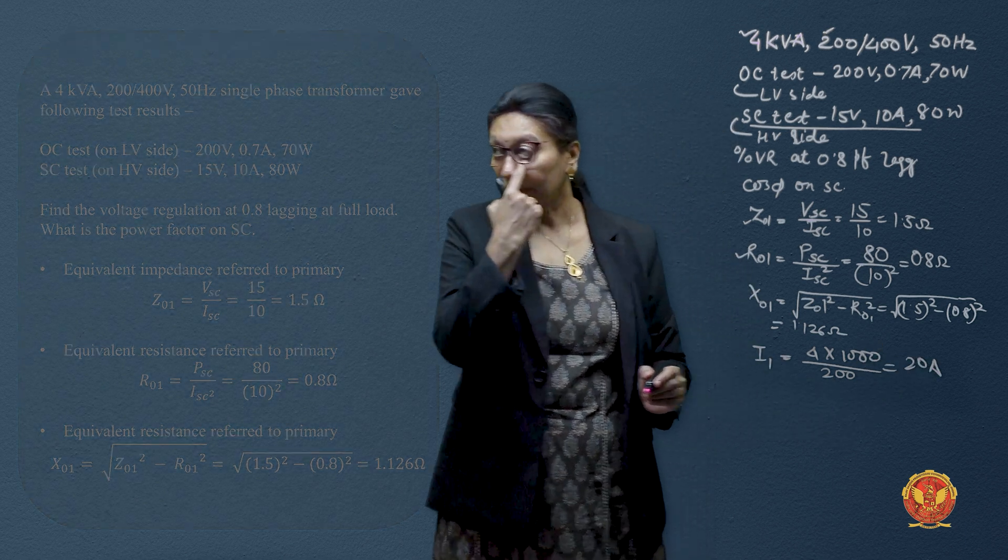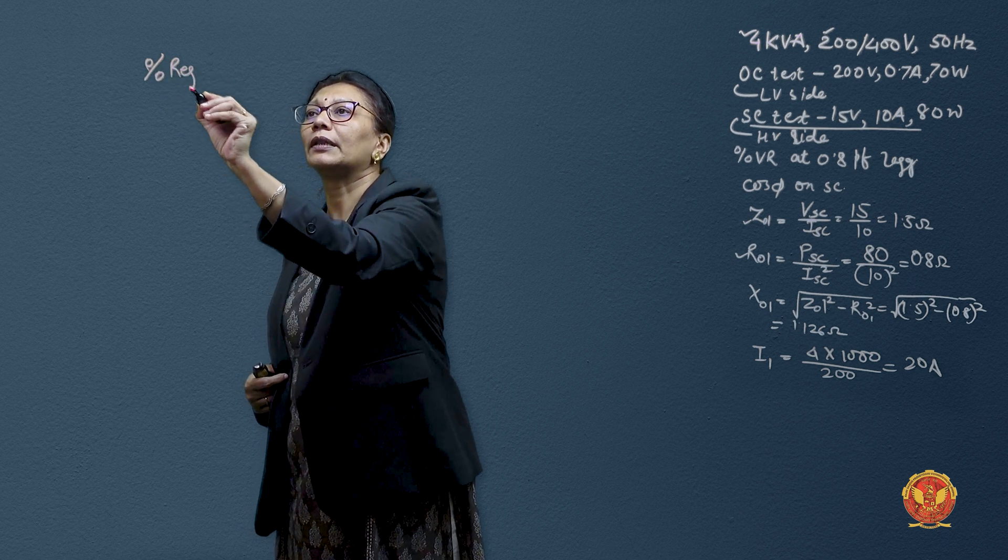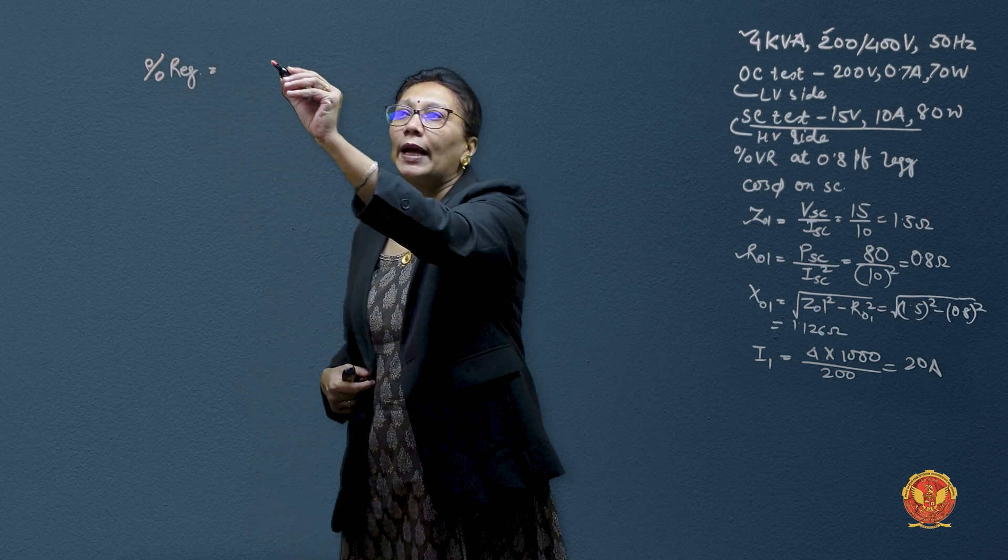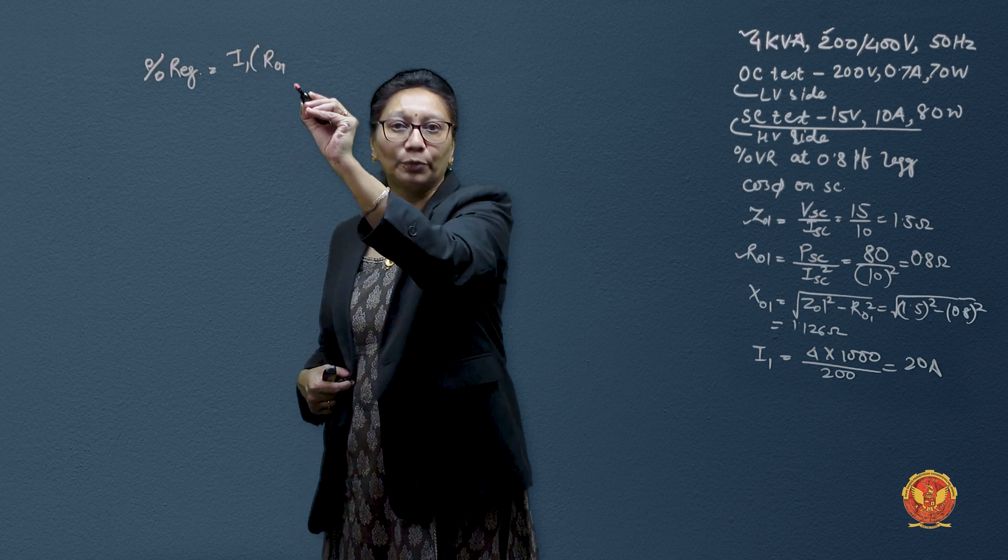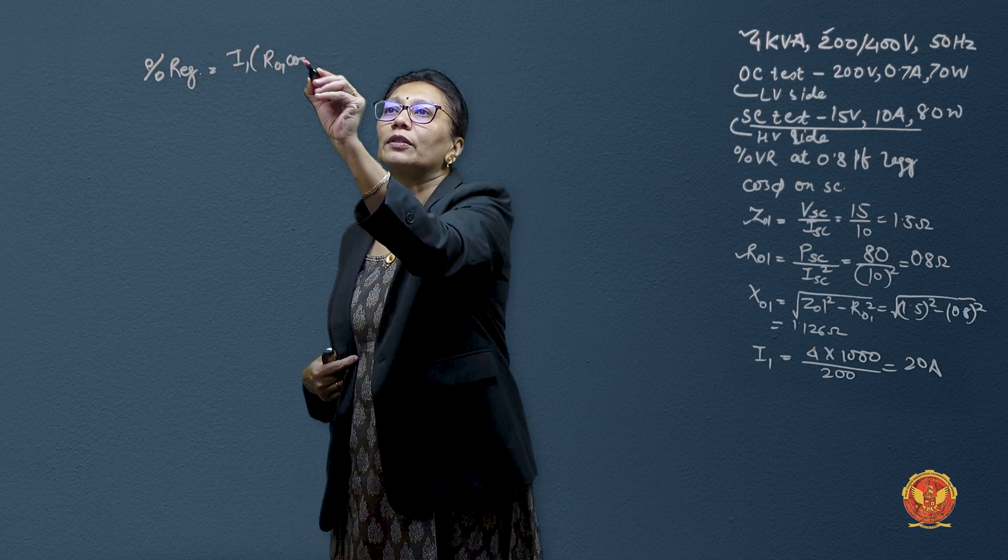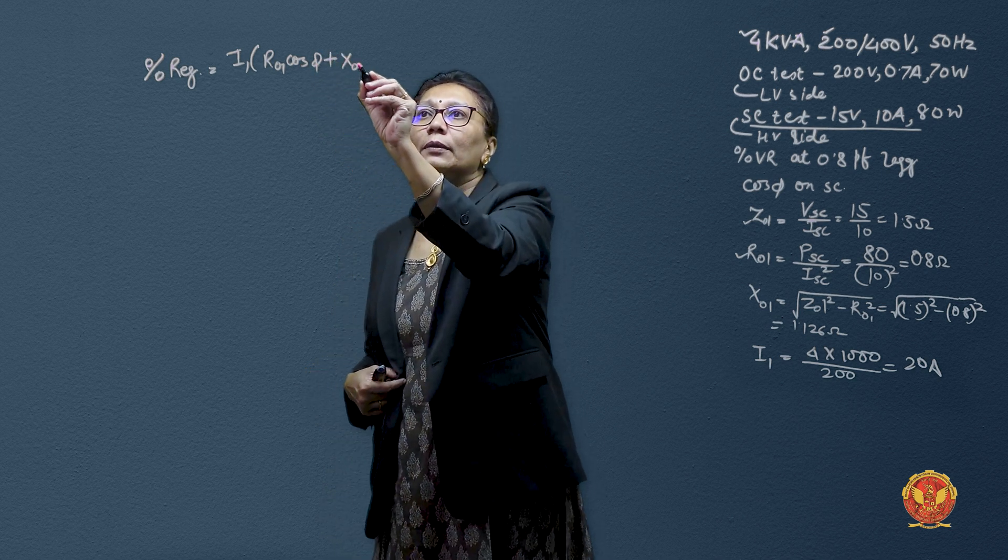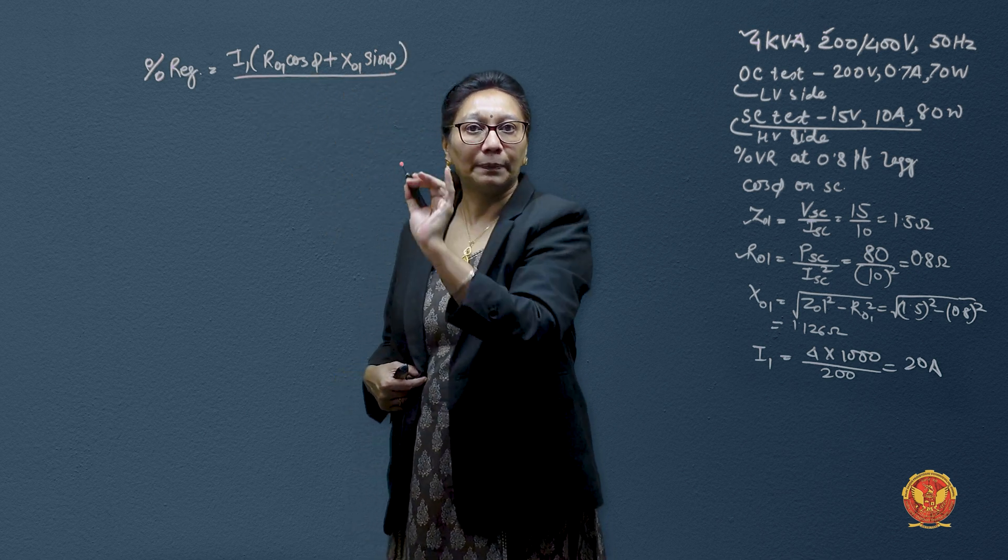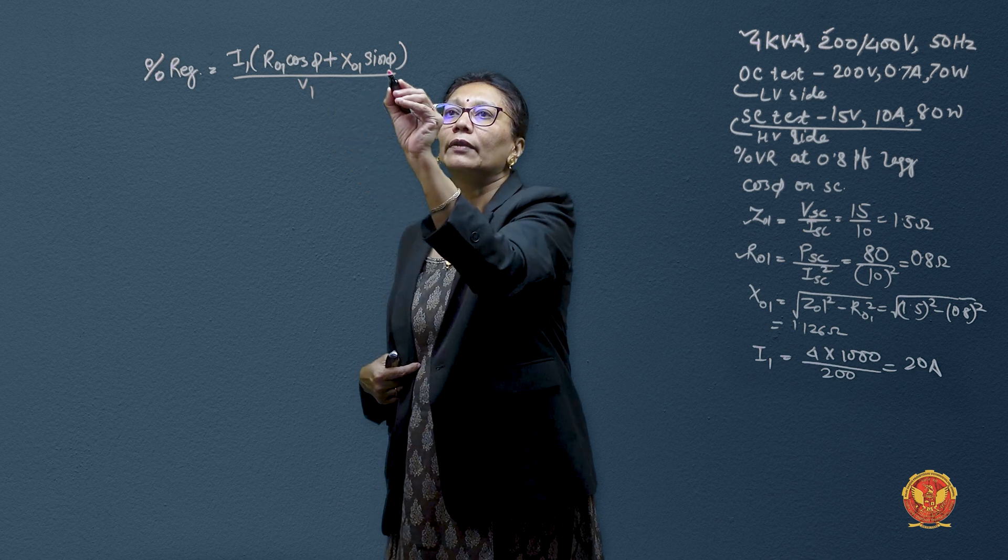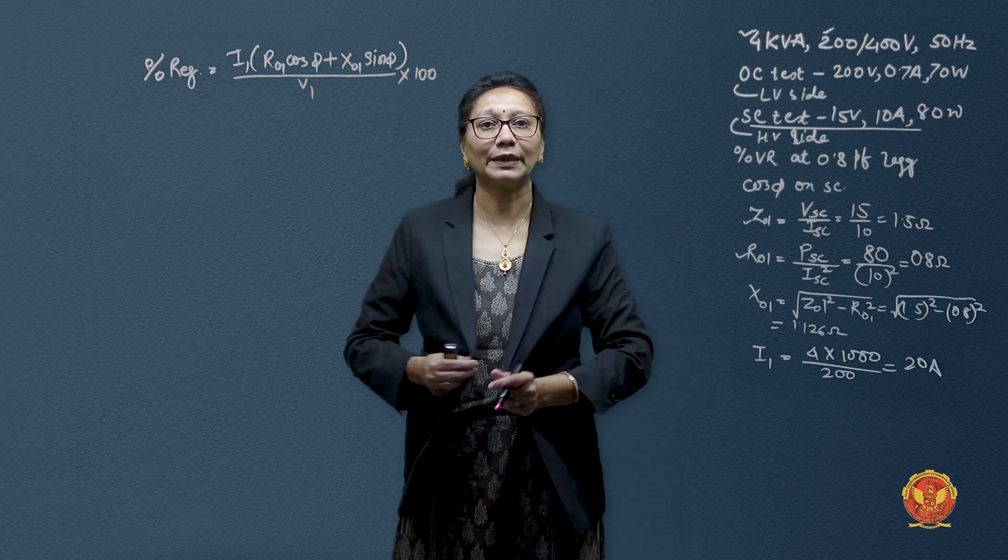Now we need percentage voltage regulation formula. So percentage regulation can be taken as I_1 into drops, that is R referred to primary into cos phi plus we have seen X_01 into sin phi divided by the primary side voltage. And as we need to know it into percentage, we have to multiply with the 100.